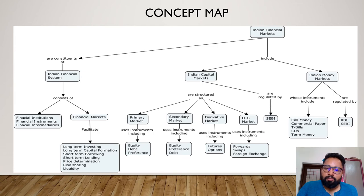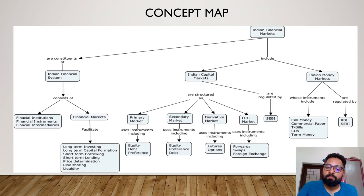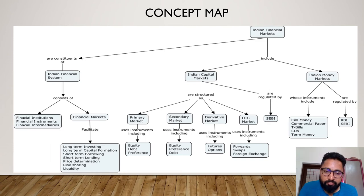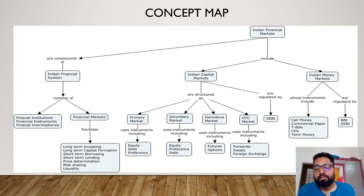This is the conceptual map to be discussed through the course. The course covers the Indian financial system and Indian financial market. The Indian financial system consists of financial institutions, financial instruments, and financial intermediaries. The financial market facilitates long-term investing, long-term capital formation, short-term borrowing and lending, price determination, risk sharing, and liquidity. The Indian capital market is structured as primary market, secondary market, derivative market, and over-the-counter market. Instruments traded include equity, debt, preference shares, futures and options in the derivative market, and OTC instruments such as forward swaps and foreign exchange.